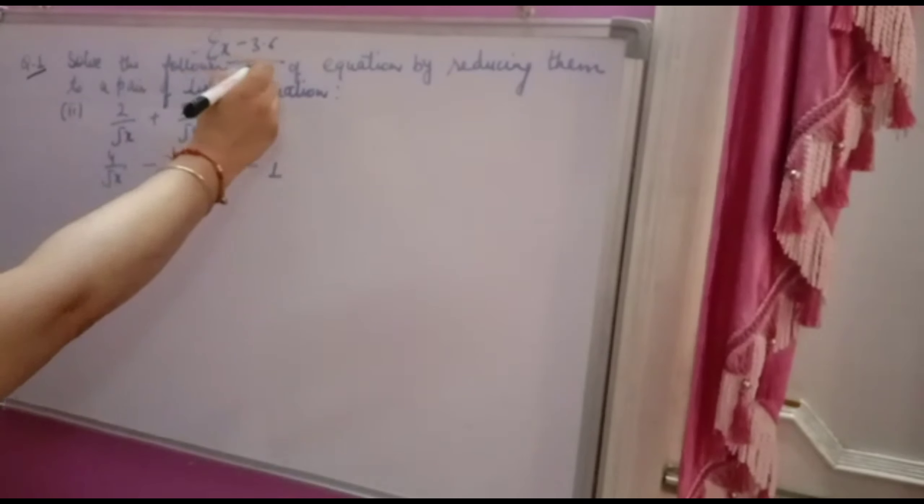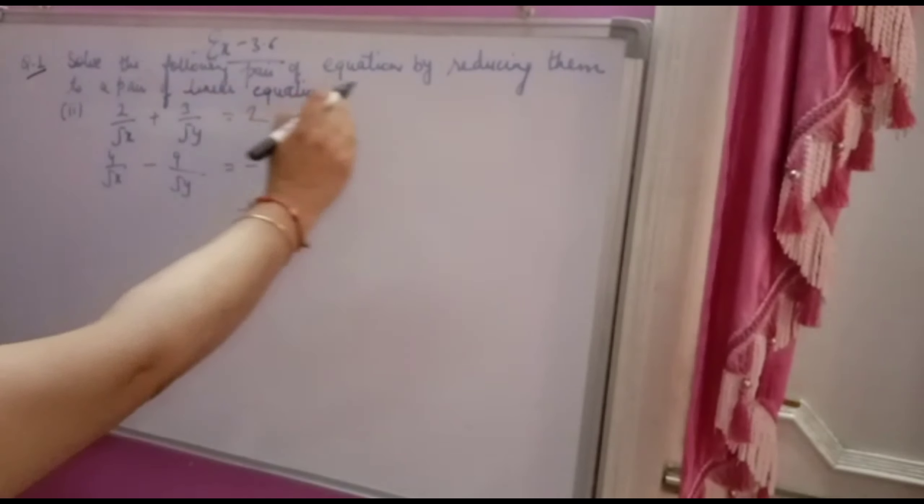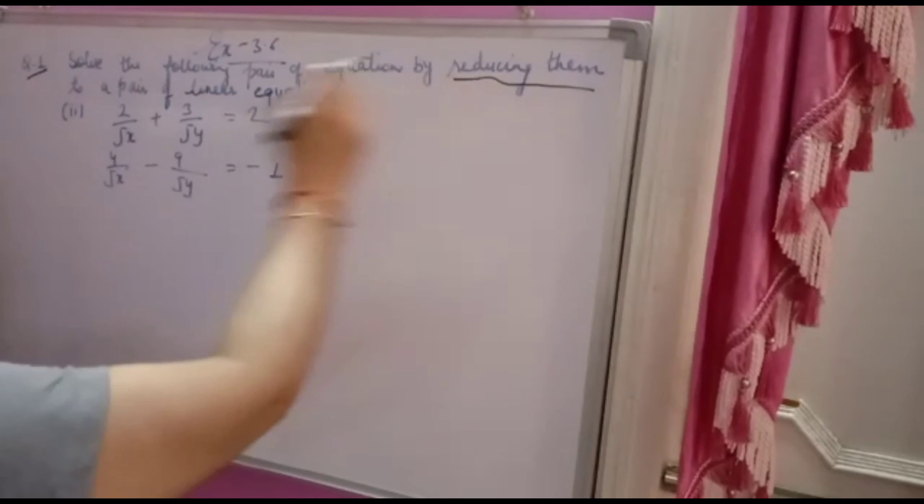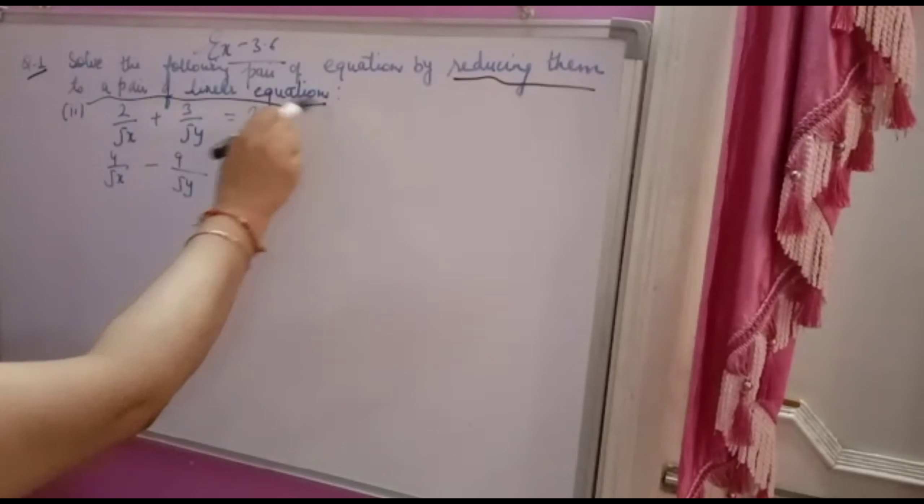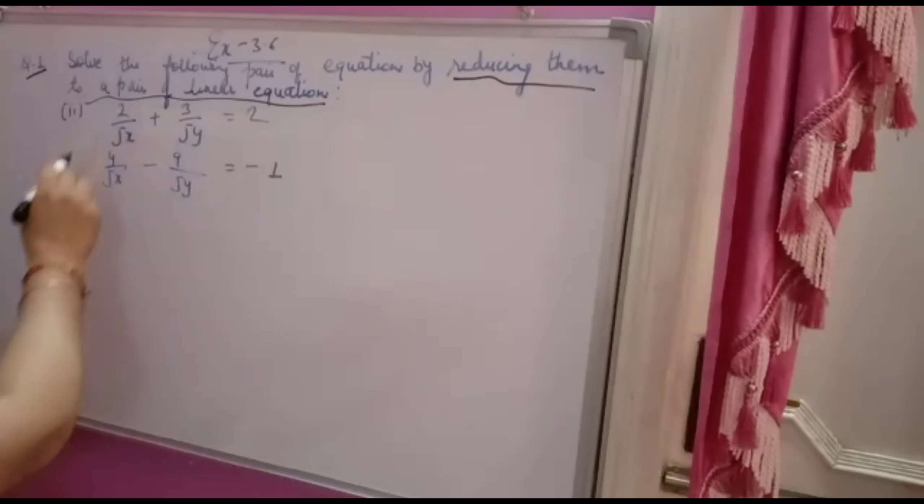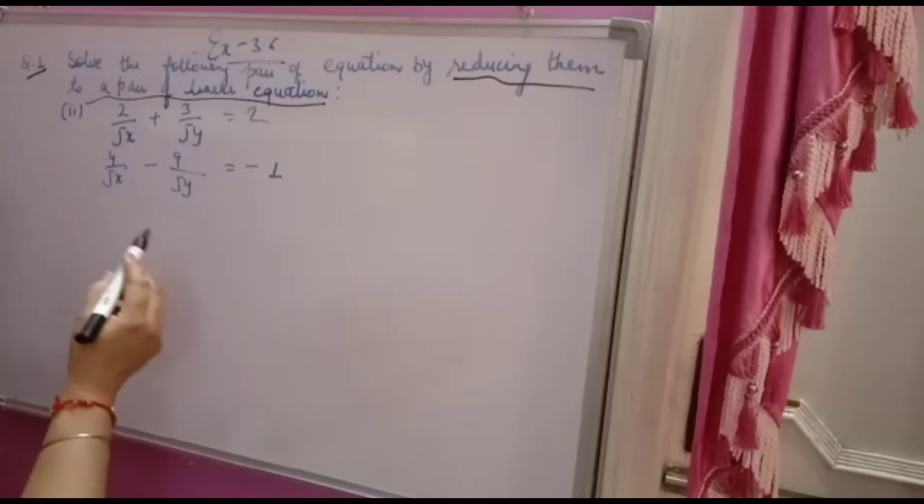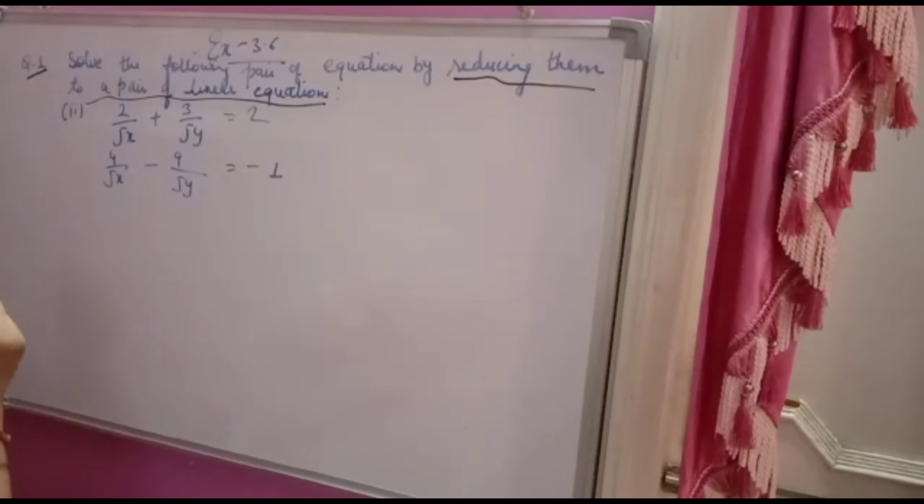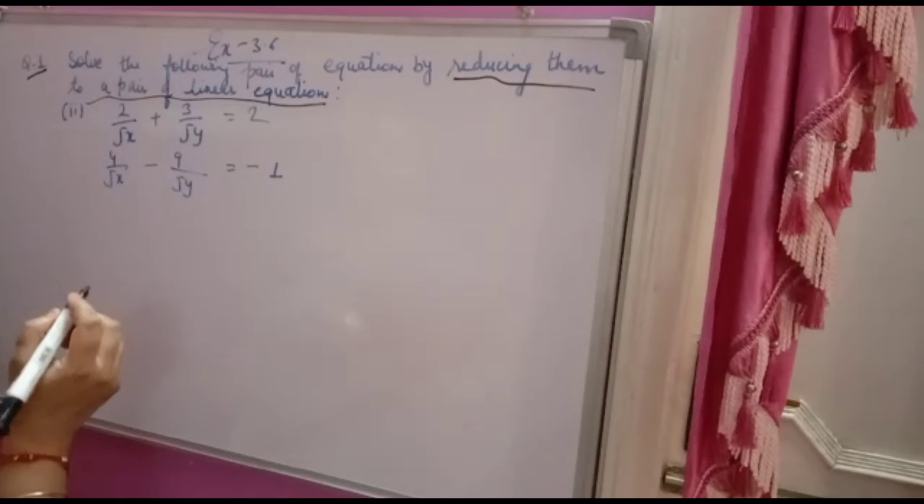CXS 3.6 First question: solve the following pair of equations by reducing them to a pair of linear equations. These are not linear equations. You have to reduce and solve. For reducing them to linear equations, you have to put substitutions.